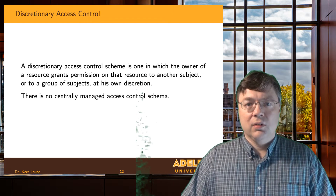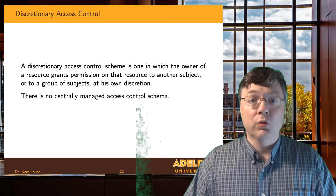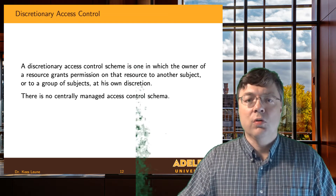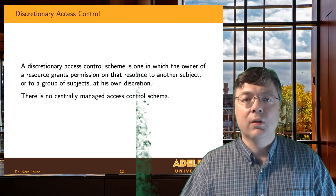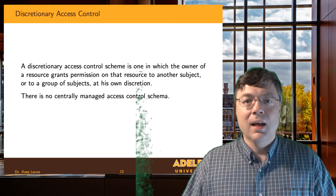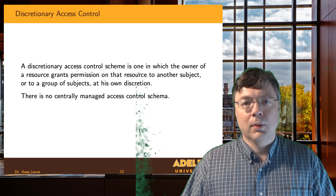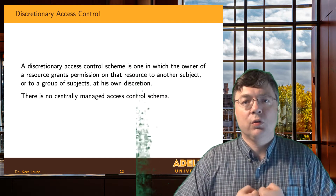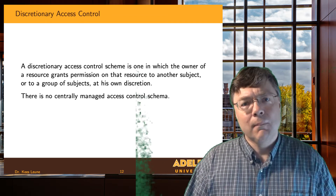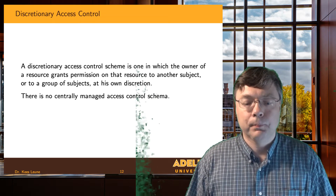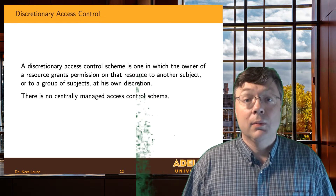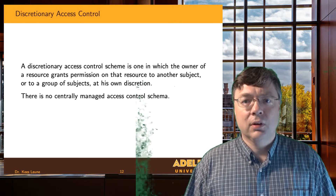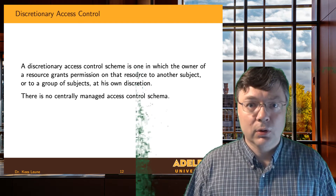In most operating systems, we also have a special type of user — the super user or the administrator. Even though you, as the creator of the file, don't necessarily give explicit permissions to that super user, they will have access to that file. There's always someone on the system who is external to the access control system and can override those access controls. Technically you might say that violates the principle of full mediation, but it's really not — the exception is still enforced by the full mediation system, it's just an exception programmed into it.